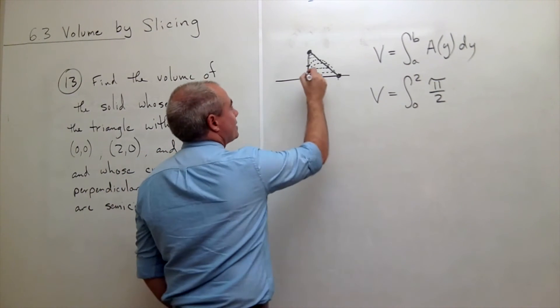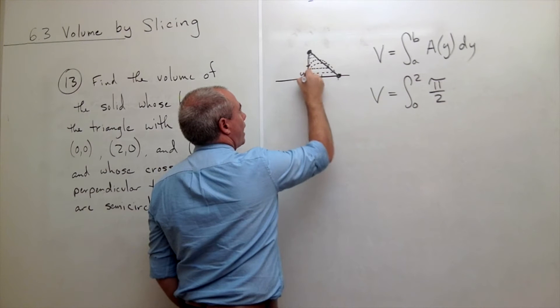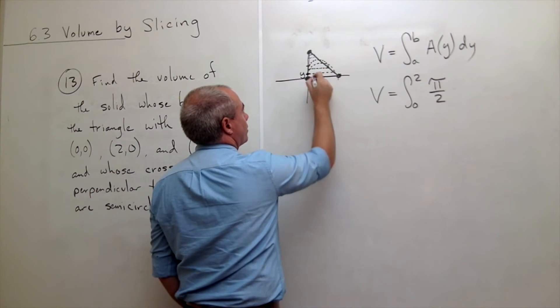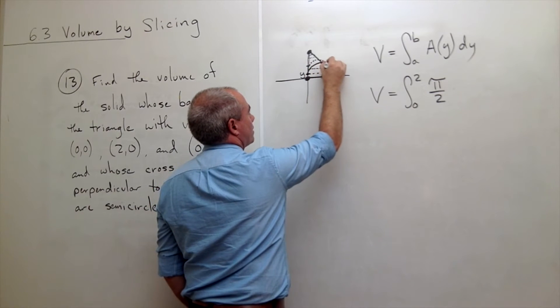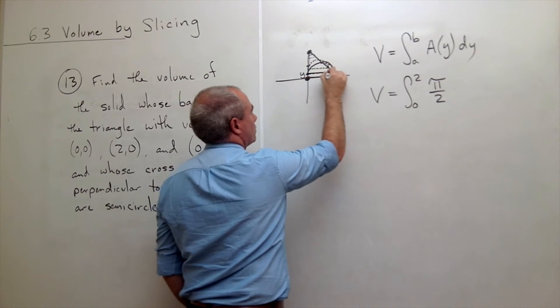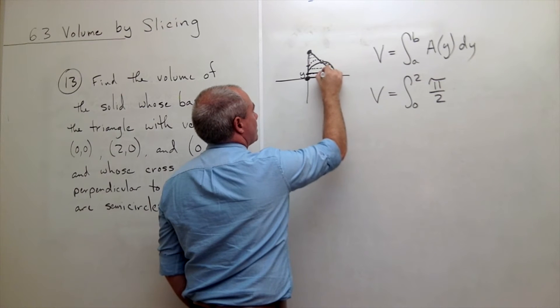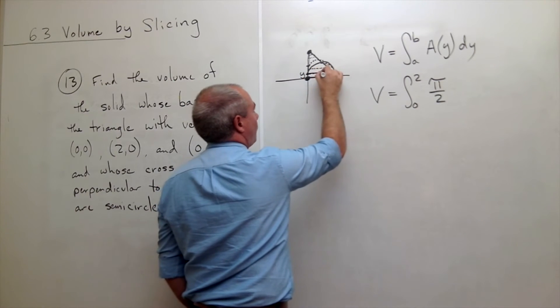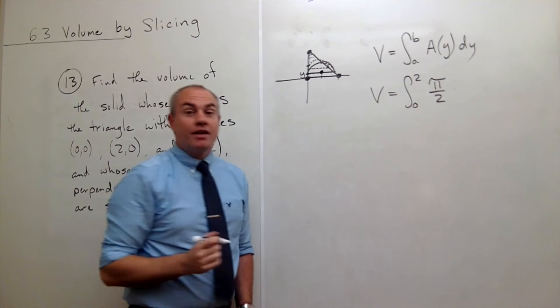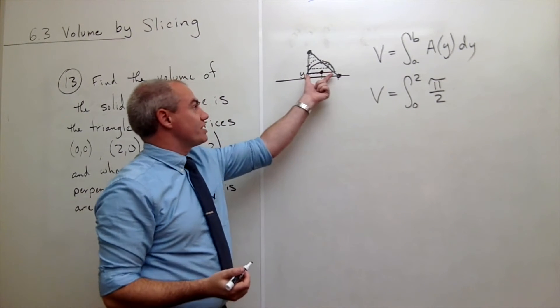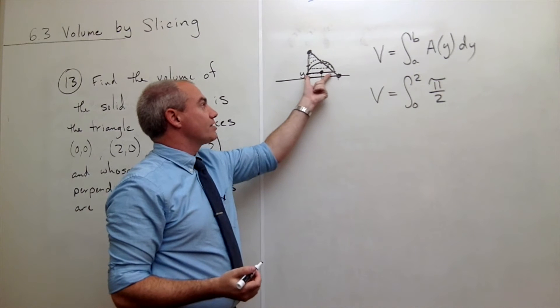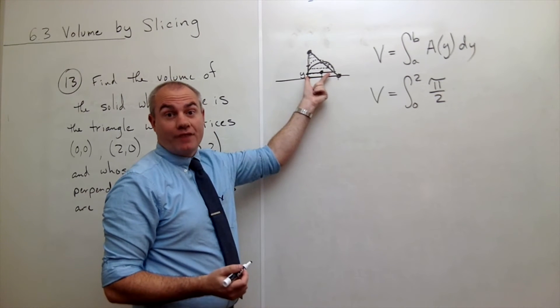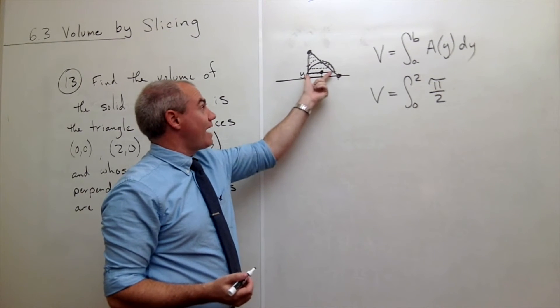So if I'm sitting up here at a point y, what's the radius of my semicircle? So the semicircle looks like this, so the radius of that semicircle is halfway to the other side. An easy mistake to make here would be to just say oh it's just this function. It's not that function, it's half of that function. Well what's half of that function?